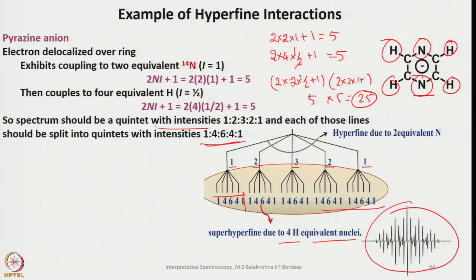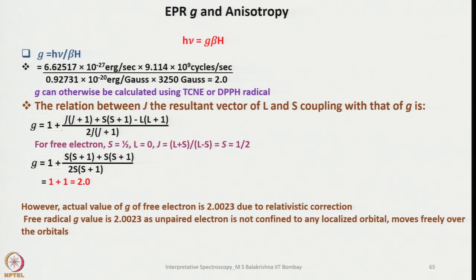The spectrum is shown here — you can see the hyperfine splitting due to two equivalent ¹⁴N and the super hyperfine splitting due to four equivalent hydrogen nuclei. The first level of coupling is called hyperfine, and further coupling with additional non-equivalent nuclei is called super hyperfine. After that, no matter how many more interactions exist, they are all referred to as super hyperfine splittings. This gives another beautiful EPR spectrum with 25 lines.